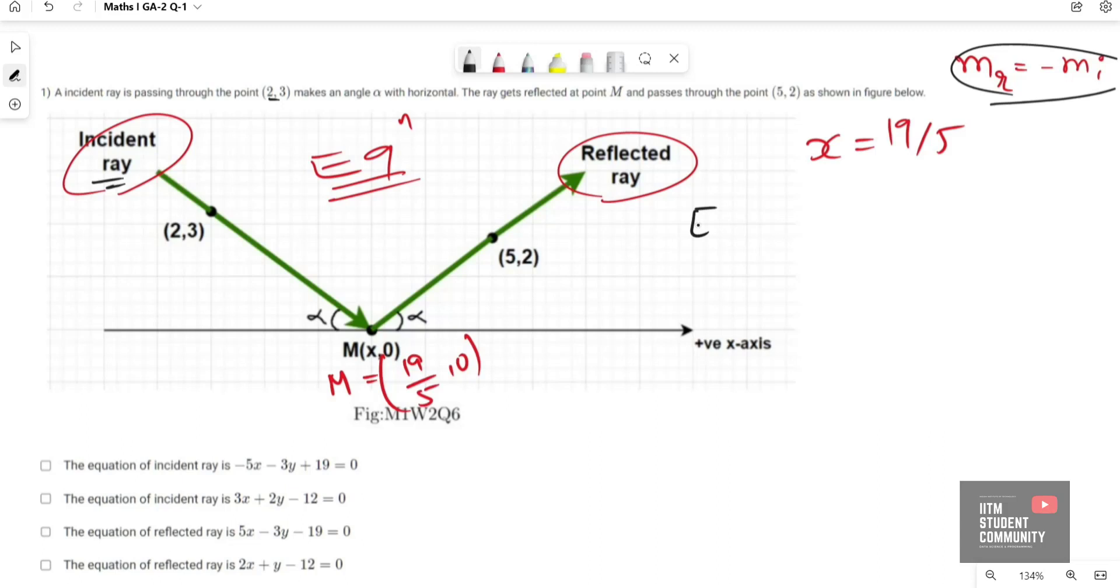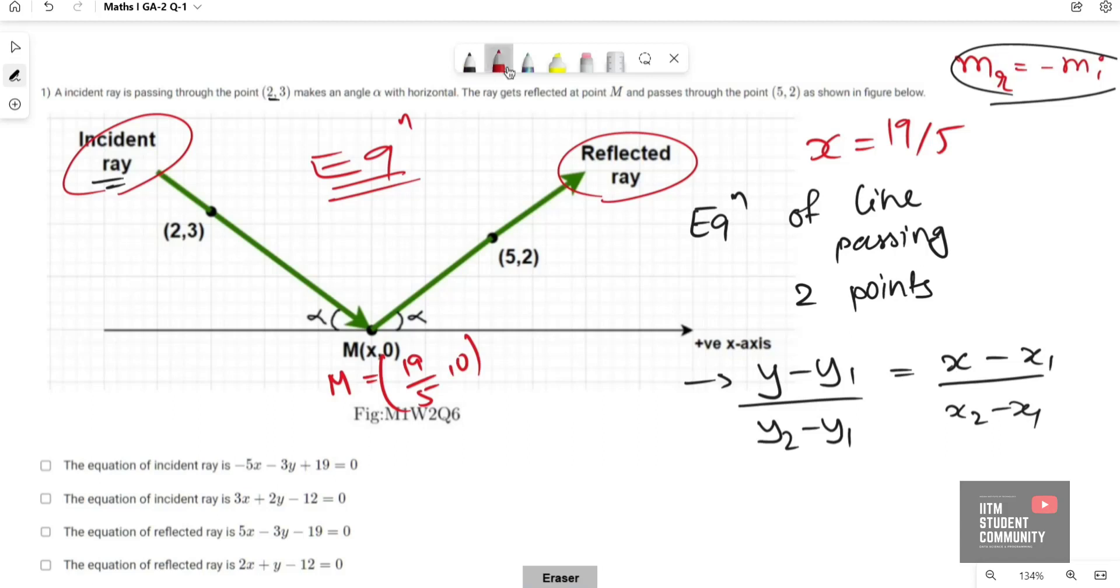Our formula for equation of line passing through two points is (y minus y1) divided by (y2 minus y1) equals (x minus x1) divided by (x2 minus x1). So this is our main formula. Using this formula we will find the equation of reflected ray.